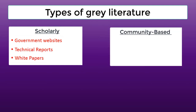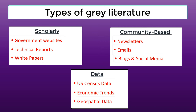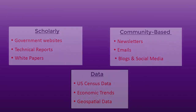There's also community-based gray literature, which can include things like newsletters, emails, blogs, and even social media posts. Data is also a kind of gray literature. Think of census data, or economic trends, or geospatial data. These are all extremely valuable and used extensively in scholarly research.